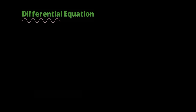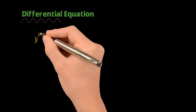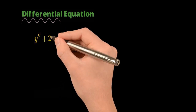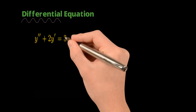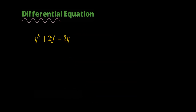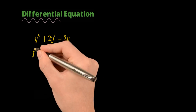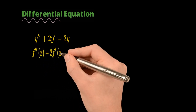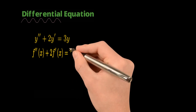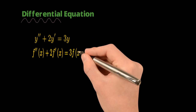Here's an example of a differential equation. If I were to write that the second derivative of y plus two times the first derivative of y is equal to three times y, this right over here is a differential equation. We could also write this in function notation: the second derivative of our function with respect to x plus two times the first derivative of our function is equal to three times our function.